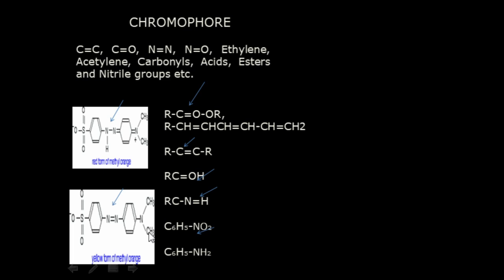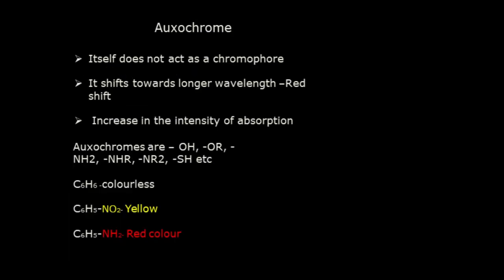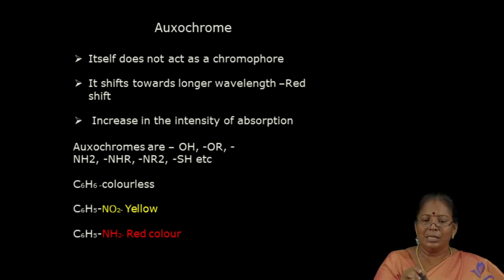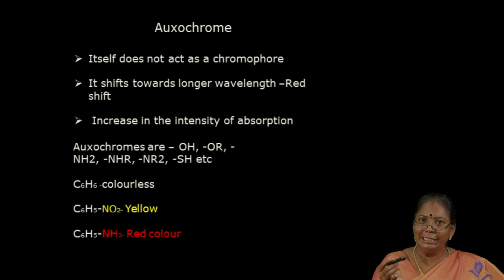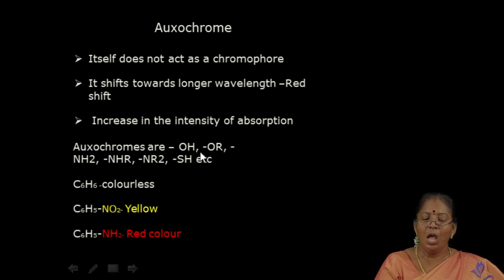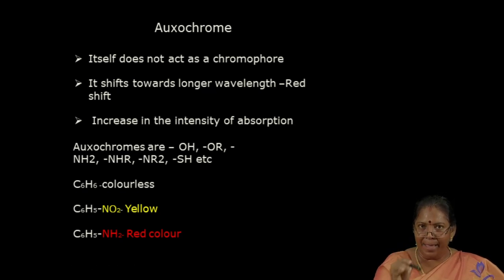Here, this is methyl orange and red thymol blue. These two absorb the UV region and reflect the color. Then next, oxochrome. With oxochromes, we may see the color, but if some other compounds are substituted in that compound, we may observe a difference in the intensity of that color. If it is in blue color, suppose some groups — that means oxochromes — are substituted along with the chromophore, the intensity of the blue color may vary; it may be increased or decreased. Such type of compounds are called oxochromes. Oxochromes are nothing but color-enhancing groups.